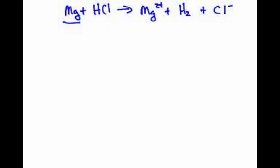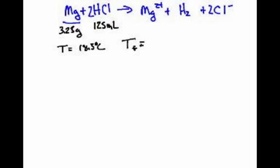Should we balance our equation? You would need a 2 here, and I believe a 2 here. That is our equation. Now what do we know? We have 3.25 grams of magnesium. We have 125 milliliters of hydrochloric acid. We have an initial temperature of the calorimeter at 18.5 degrees, and the final temperature is 25.6 degrees.